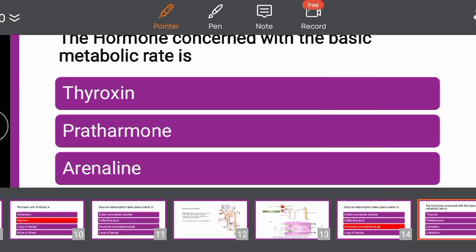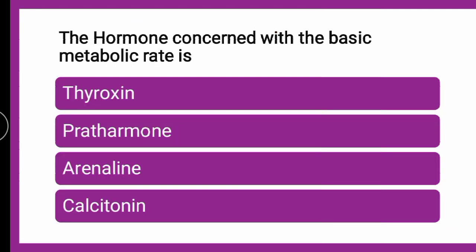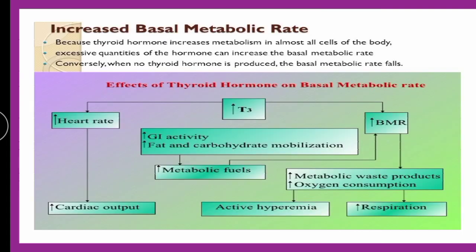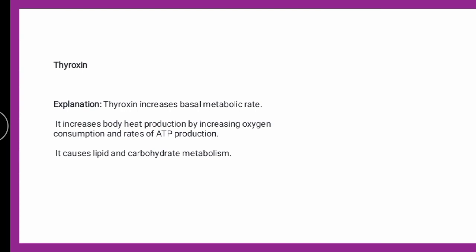The hormone concerned with BMR is T3/T4 — thyroxine. The hormone increases the metabolism in almost all the cells of the body, increasing metabolic waste production. This excess quantity of hormone can increase the BMR, that is the basal metabolic rate. So the correct answer is thyroxine, which is the hormone that increases the basal metabolic rate.